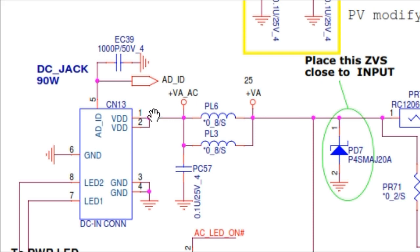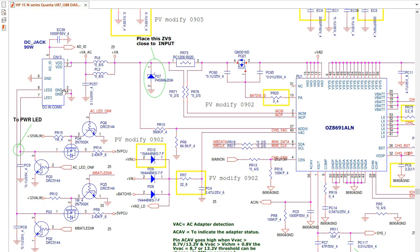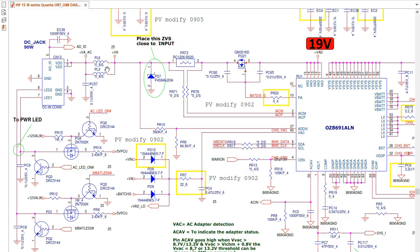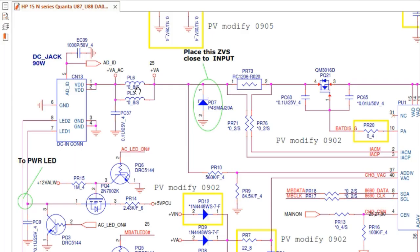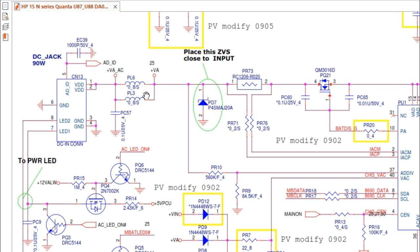Here, as you can see, we have pin number one and pin number two. We have the 19 volt, and here we have the ground. So the 19 volt goes directly to these two inductors. This is basically the symbol for an inductor. We have here PL6 and PL3 — so the reference for the inductor is L or PL.